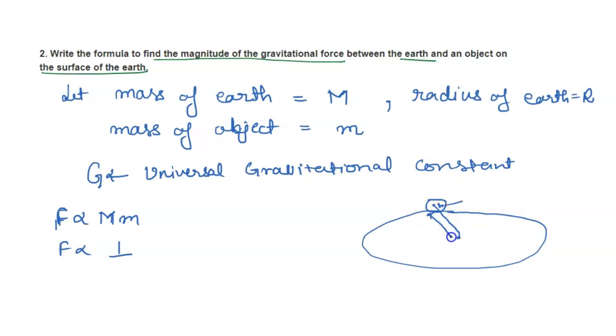So we consider the distance between the object and the Earth to be capital R. Here, F is inversely proportional to R squared, so F equals Mm upon R squared.